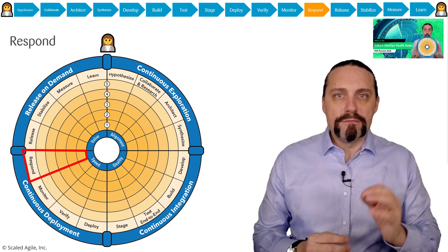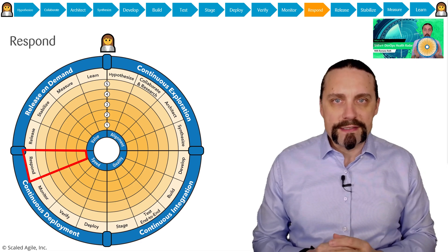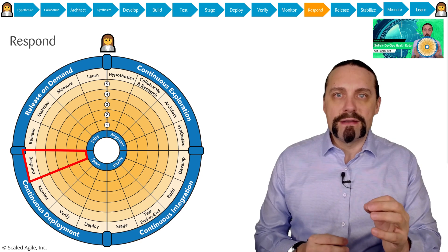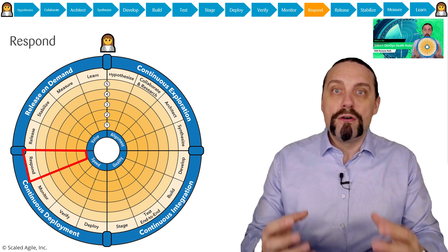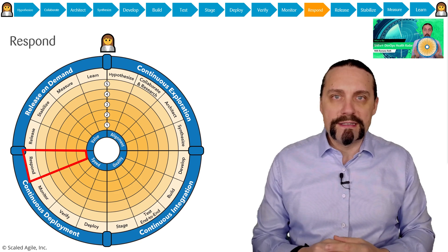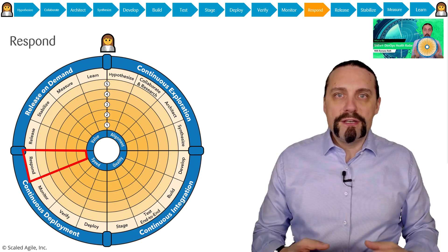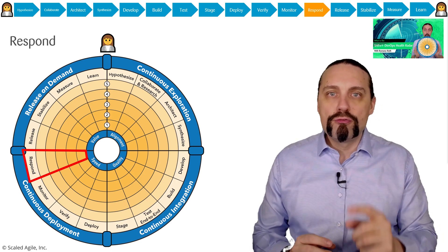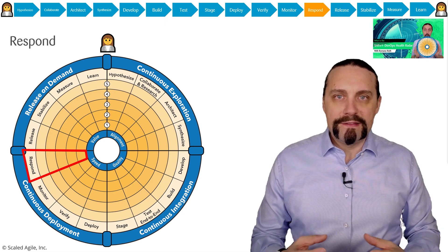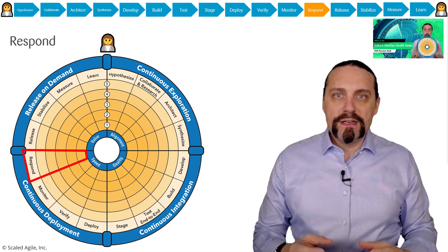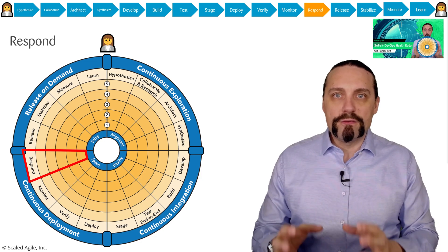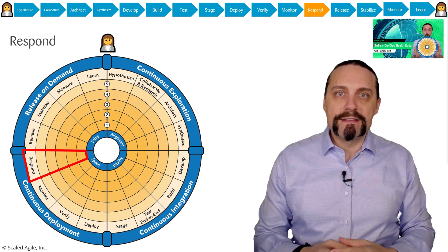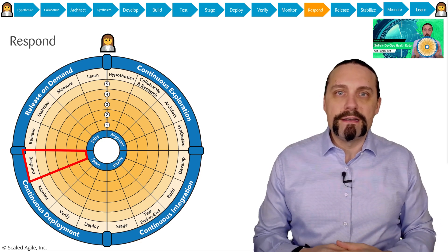With these epics we go into collaborate and research, where we check what the real customer need or the real market need is behind that hypothesis. After that, we create the minimal amount of architecture needed to prove the hypothesis. Then in synthesize, we break down the epic into features, put them on a backlog, and prioritize them so we are ready to implement.